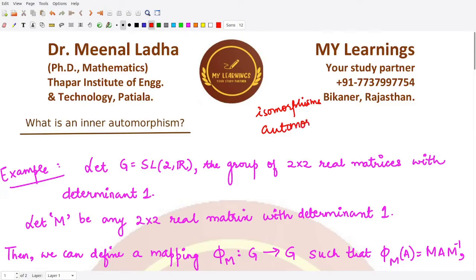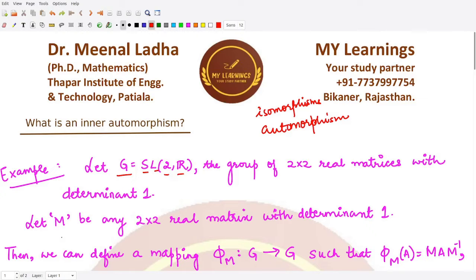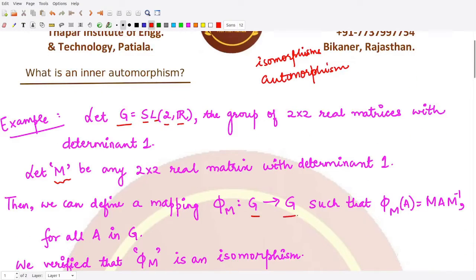What is this inner automorphism? As an example, we already know the special linear group of order 2, consisting of all 2×2 matrices with entries from the real numbers such that the determinant equals 1. If we select some matrix m of this kind, we can define a mapping phi_m from G to G such that phi_m of a equals m·a·m⁻¹ for all a in G.